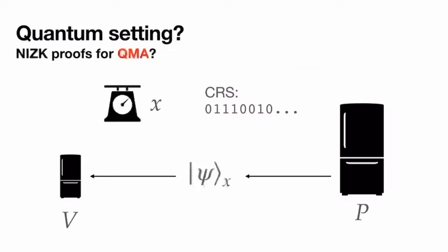Post-quantum security might not be the only thing we're interested in a world with quantum computers. Maybe we're now interested not just in NP problems but also in problems in QMA — the quantum analog of NP — the class of problems checkable efficiently by a quantum computer with access to a quantum witness. In this case x would be an instance of a QMA-complete problem, and we might want to allow the message the prover sends to be quantum, while still achieving a single-message protocol.